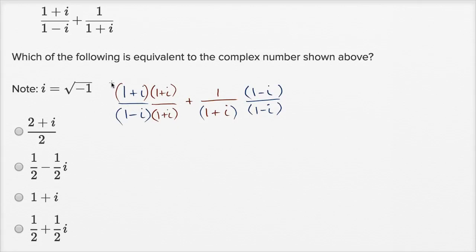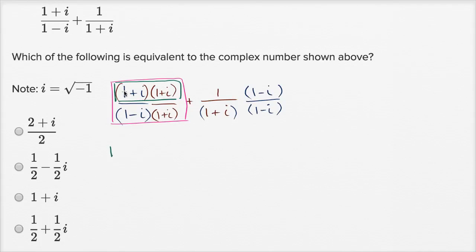For the first fraction's numerator, we have (1+i)(1+i). Let's multiply it out using different colors to keep track. One times one is one, one times i is i, i times one is i, and i times i is negative one.